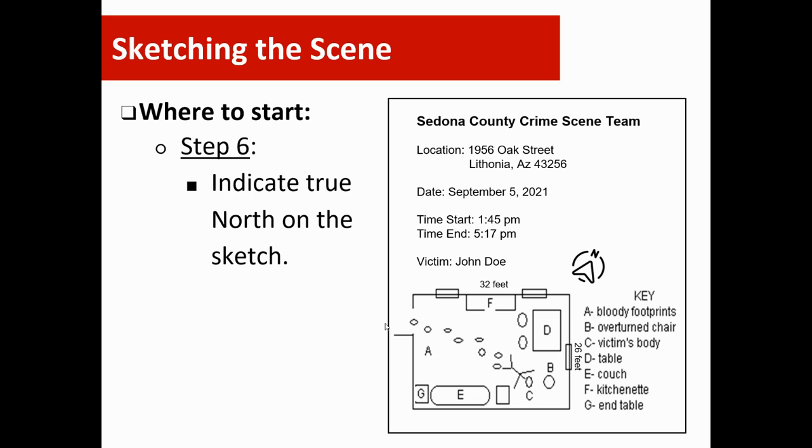The final step, indicate true north on the sketch. This is why it's important to have a compass to figure out where north is in relation to your crime scene. As you can see on this sketch, we've included it so a jury or other investigators can understand where the crime scene is in relation to north. That ends our lesson today, and I'll see you in the next lesson where we'll cover photographing the crime scene. Thank you.